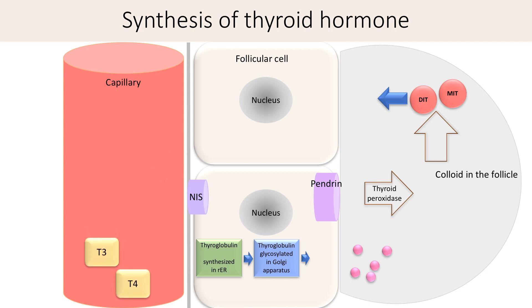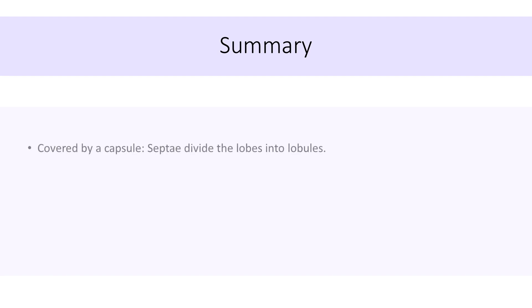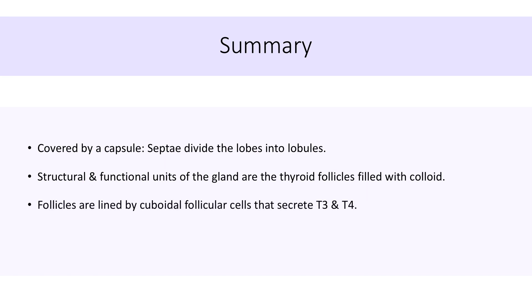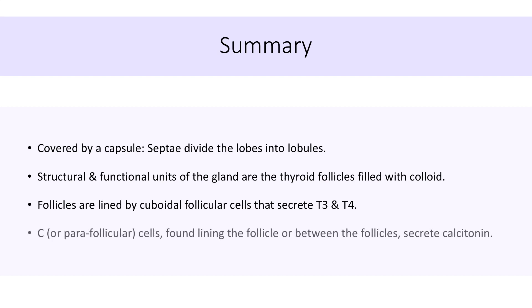To quickly recollect what we have learned: the thyroid gland is covered by a capsule, and septae divide each lobe into irregular lobules. The structural and functional units of the gland are the thyroid follicles filled with colloid. Follicles are lined by cuboidal follicular cells which secrete T3 and T4. C cells or parafollicular cells are found lining the follicle or between the follicles, and these secrete calcitonin.